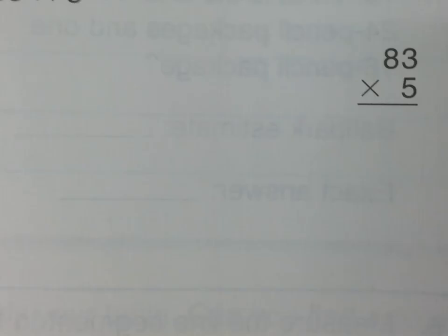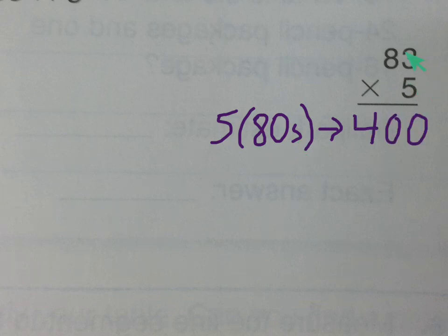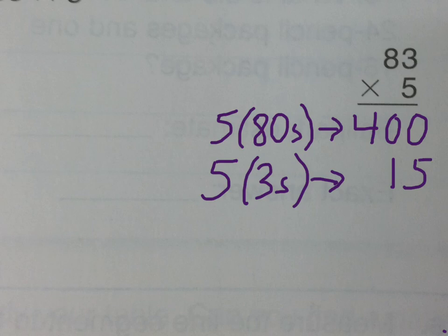Let's try another one. We have 83 times 5. First, 5 times the tens place - 5 times 80. Knowing your multiplication facts is useful here. We know 5 times 8 is 40, so 5 times 80 must be 400. Next, 5 times 3 gives us 15. Make sure your place values line up, then add. 83 times 5 is 415.